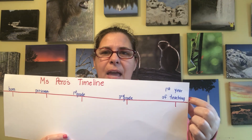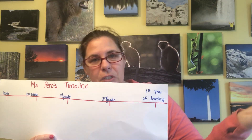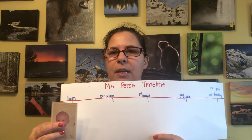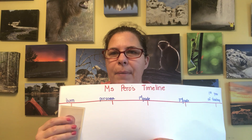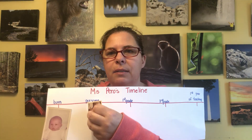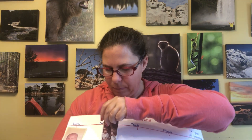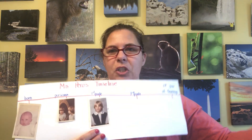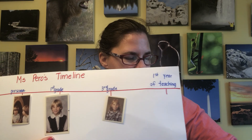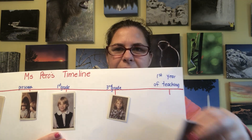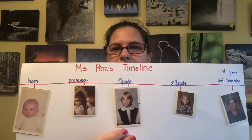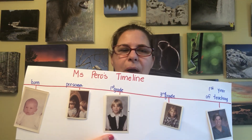Now this timeline doesn't end here because obviously my life continued on past this. What I did is I took some pictures, put a piece of tape on the back of them, and I can put them in order like this. So in preschool, then in the 80s I went to first grade, then third grade, and then I skipped a bunch of years and had my first year of teaching in Hudson, Ohio. So there's my timeline of just some random pictures I picked out of a photo album.